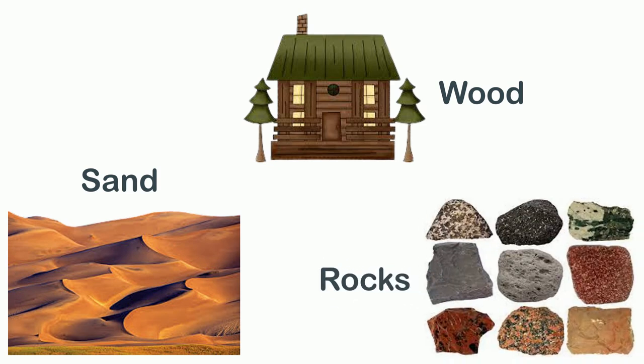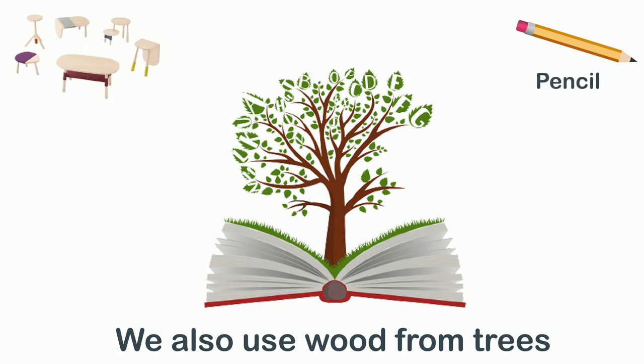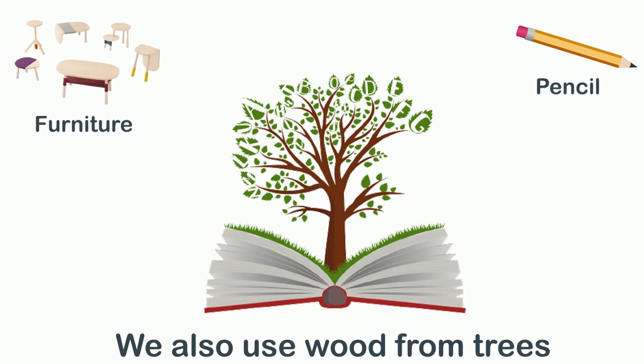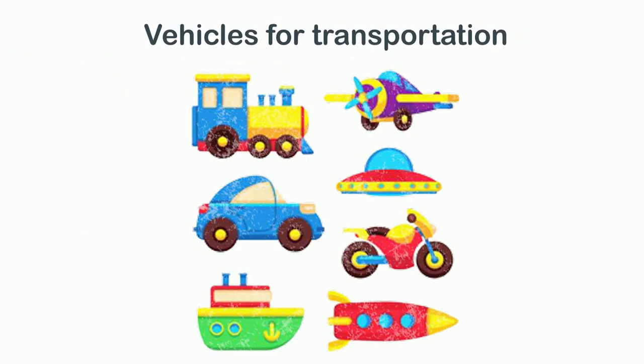We also use wood from trees to make paper, pencils, and furniture. We use metal from the earth to produce different utensils for cooking and eating, and vehicles for transportation.